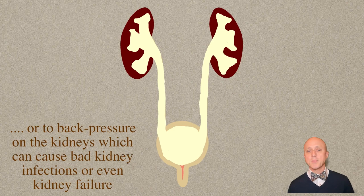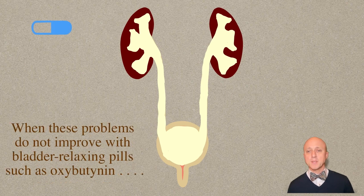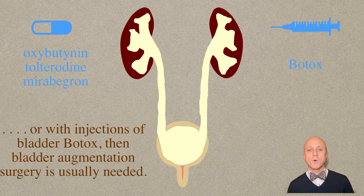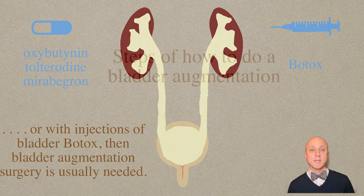When these problems do not improve with bladder-relaxing pills such as oxybutynin, tolterodine, or mirabegron, or with injections of bladder Botox, then bladder augmentation surgery is usually needed.